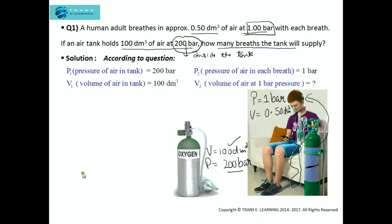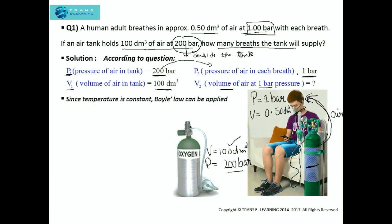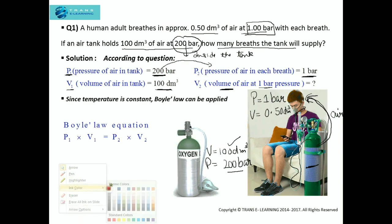Let's see what is given and what needs to be found. I have taken the volume and the pressure of the air tank as the initial pressure and volume, because the air is flowing from the tank into the human. The human adult is inhaling the air at one bar, so the pressure is getting reduced as it moves out of the cylinder. To find how many breaths the tank will supply, we first need to find the total volume of air this human is inhaling at one bar pressure.